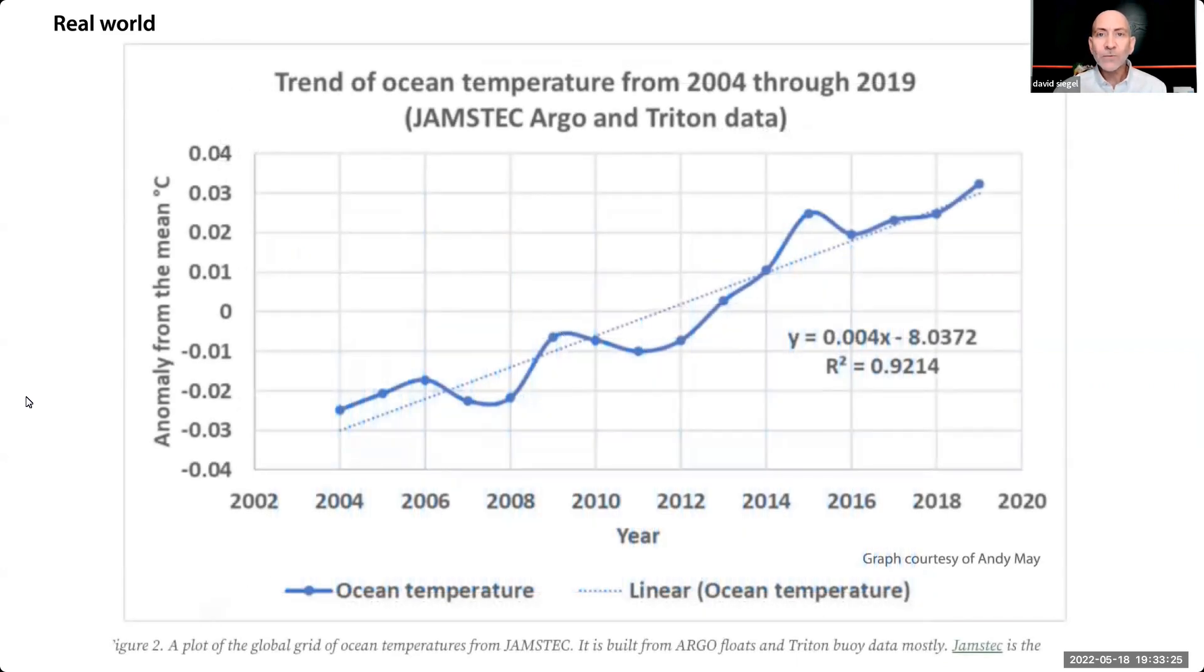In the oceans, the Argo floats started measuring temperatures 1,800 meters under the surface in 2004, and so far they report about 0.04 degrees centigrade per decade. That isn't very much. We're only halfway through the current AMO cycle, so we should expect warm waters to continue to flow northward from Africa to the Arctic for another 20 years or so.